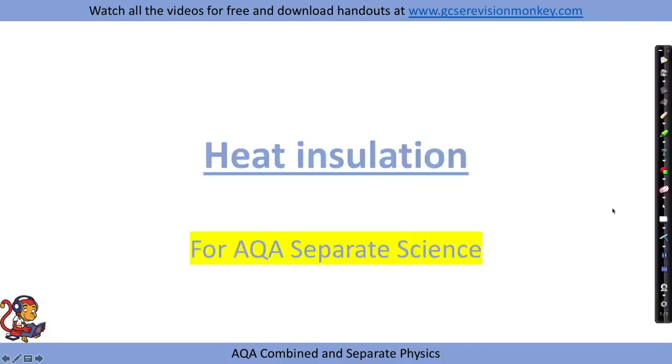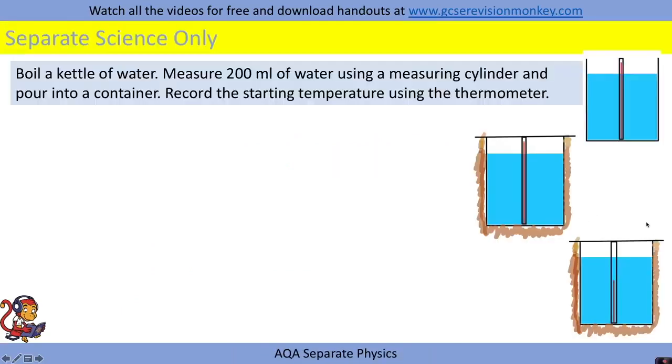Heat insulation required practical - this is for separate scientists only. To start, boil some water and measure, for example, 200 mils of water using a measuring cylinder and pour it into a container. Record the starting temperature using the thermometer.